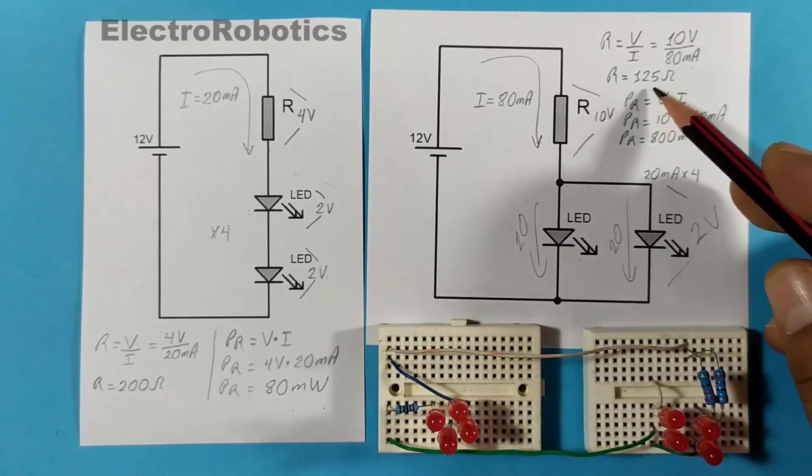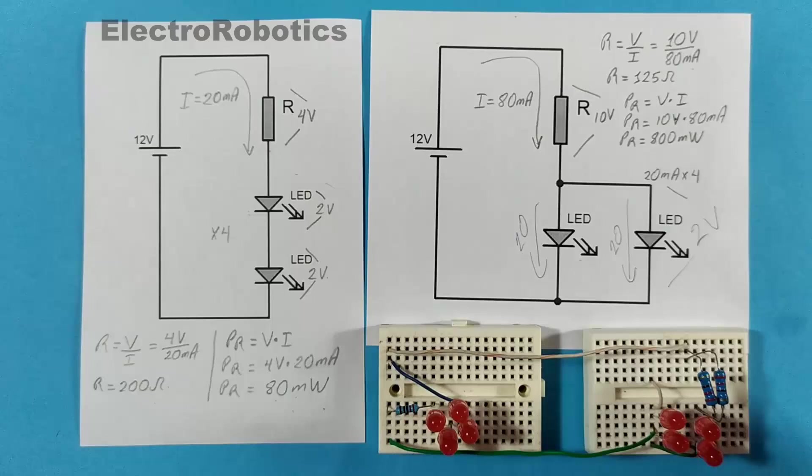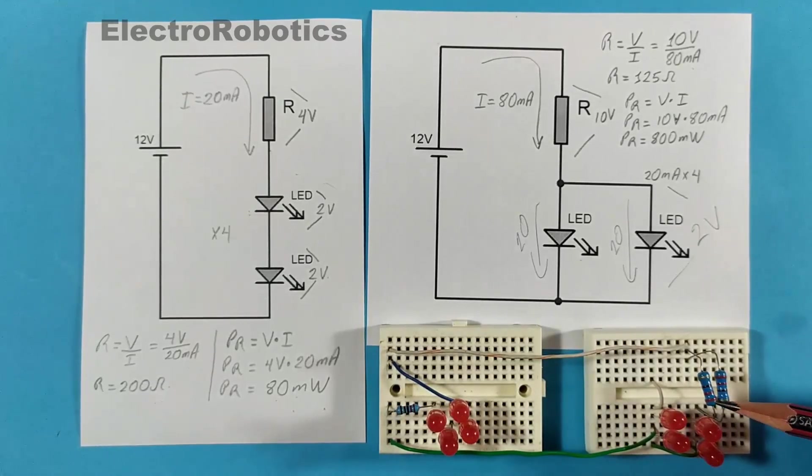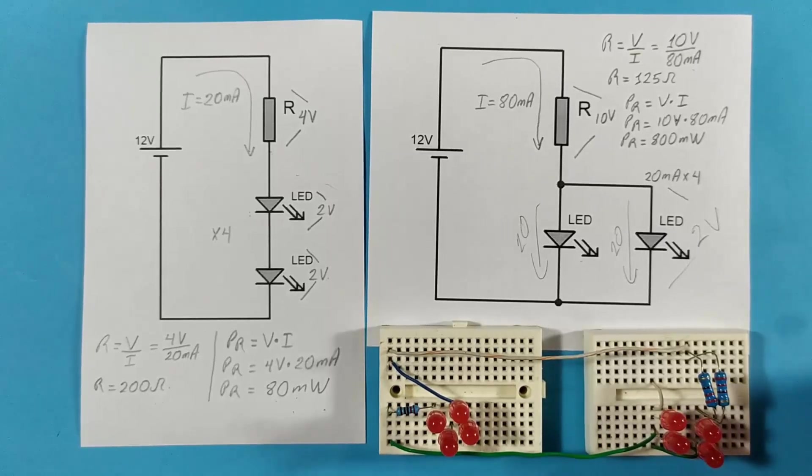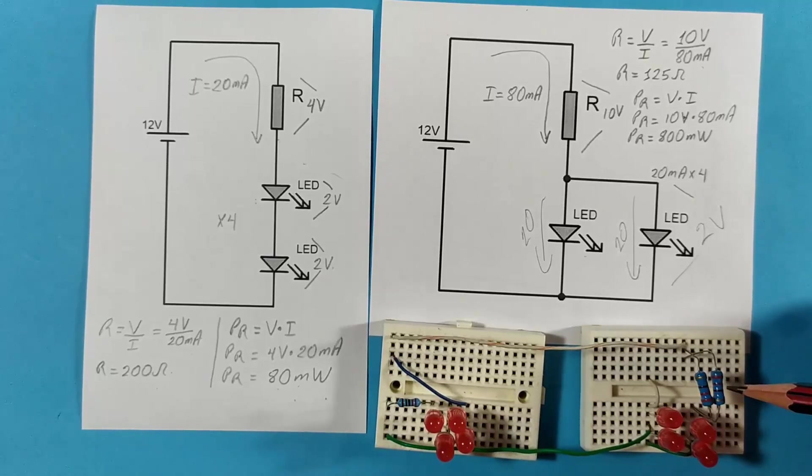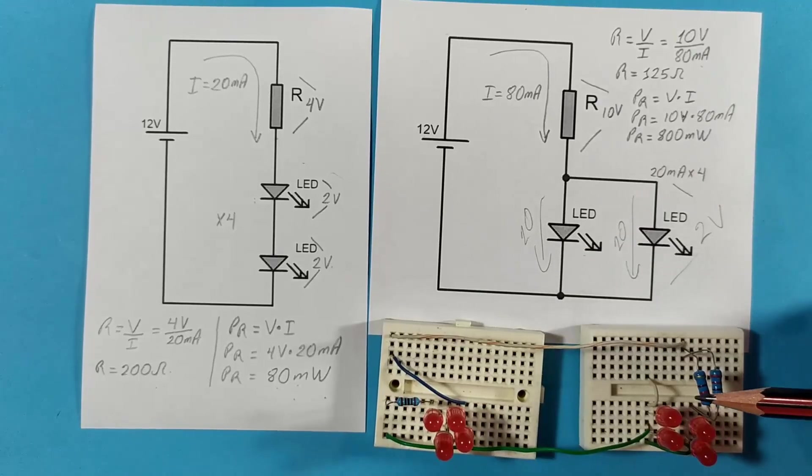But unfortunately, I do not have a 125 ohm 1 watt resistor, so I will use two 220 ohm half watt resistors, which added together would give me 1 watt, and in this case, the result of the resistance would be approximately 110 ohms. So here, we will have 110 ohms of half a watt, and half plus half would give me 1 watt. So it should support.